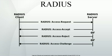RADIUS is a client-server protocol that runs in the application layer, using UDP as transport. The remote access server, the virtual private network server, the network switch with port-based authentication, and the network access server are all gateways that control access to the network, and all have a RADIUS client component that communicates with the RADIUS server. RADIUS is often the backend of choice for 802.1x authentication as well. The RADIUS server is usually a background process running on a UNIX or Microsoft Windows server.